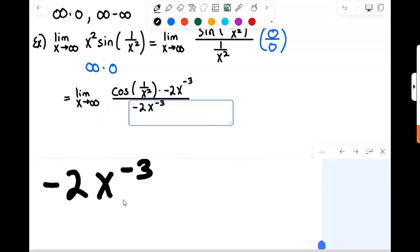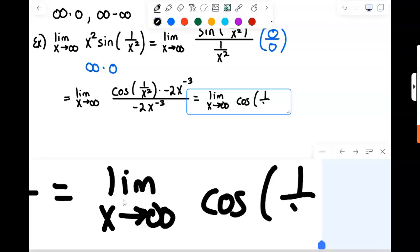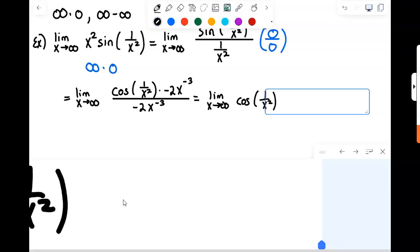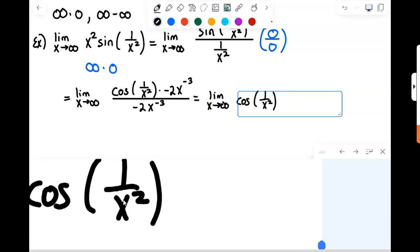And so, of course, all that stuff cancels out. And we just have limit as x approaches infinity of cosine of 1 over x squared. As x goes to infinity, 1 over x squared goes to 0. Cosine of 0 is 1. So our overall limit here is equal to 1.